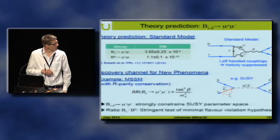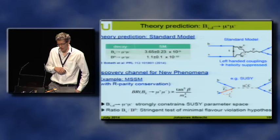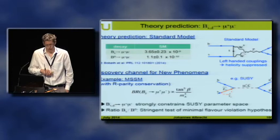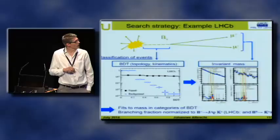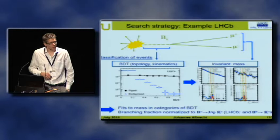Measuring these decays can strongly constrain the supersymmetric parameter space. How is a search for a decay with a branching fraction of 10⁻⁹ performed? I'll show the LHCb search strategy, though the CMS strategy is very similar. The Bs gets produced at the primary vertex and flies about one centimeter, then decays into two muons. You use all information from the separated vertex, vertex quality, and kinematics, combining them in a multivariate BDT classifier. The BDT output is a flat function for signal and a steeply falling function for background.